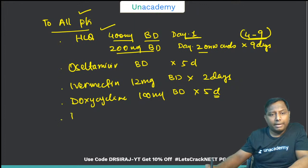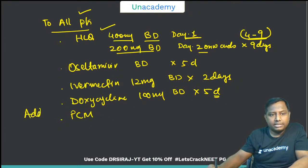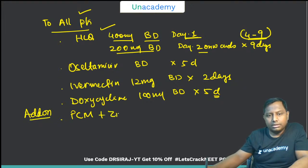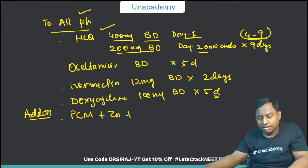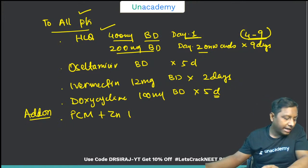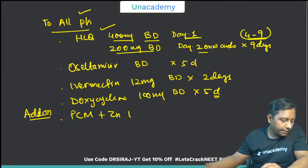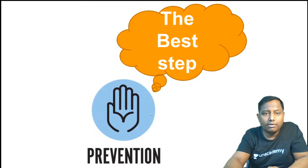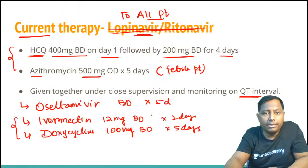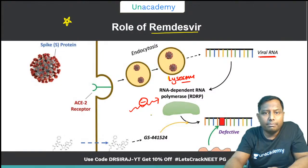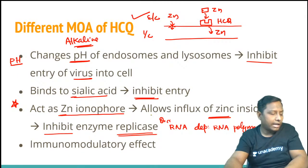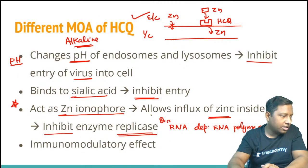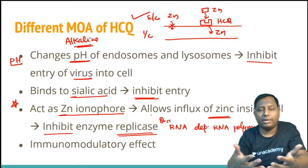Add-on drugs for all patients include paracetamol and zinc. We have discussed the mechanism of action of HCQ: it acts via three different pathways — changing pH of endosome and lysosome to inhibit virus entry, binding sialic acid to further inhibit entry, and acting as a zinc ionophore to inhibit RNA-dependent RNA polymerase.